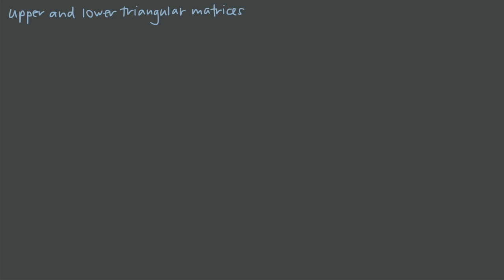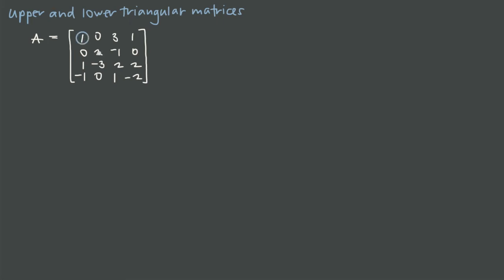We want to talk about upper and lower triangular matrices. One reason we're discussing this is because putting a matrix into upper or lower triangular form can help us calculate the determinant much more quickly. An upper triangular matrix is a matrix in which all entries below the main diagonal are zero. The main diagonal runs from the upper left to the lower right, and if all entries below it are zero, it's an upper triangular matrix.